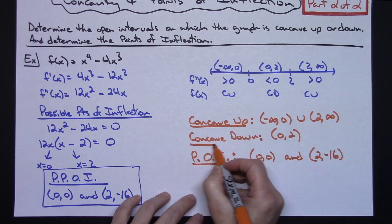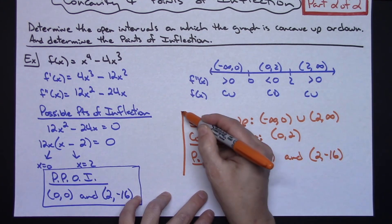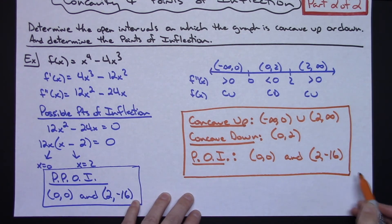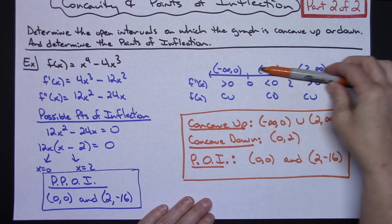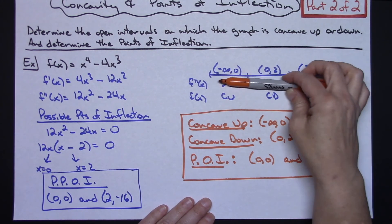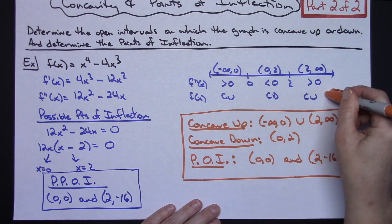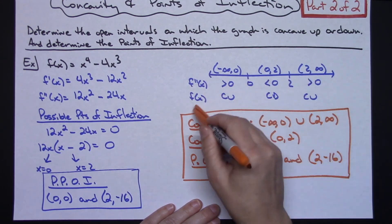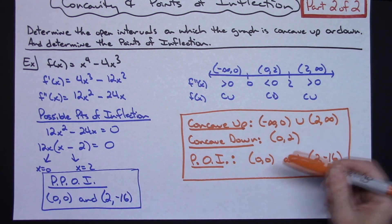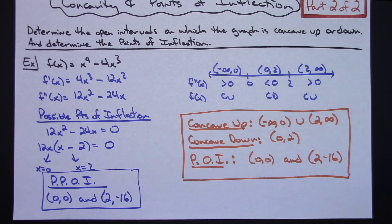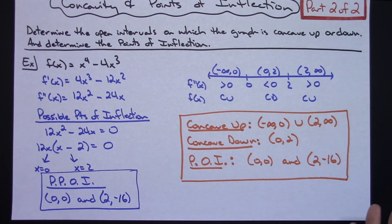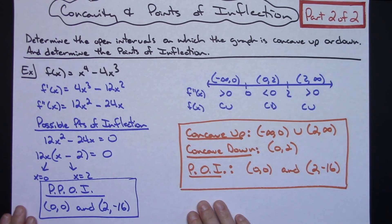A note especially for AP Calculus students: doing the number line alone is not sufficient justification. You can't just leave the number line and expect credit — you must also write out the concave up and concave down intervals explicitly. That's the tip for anyone taking the AP Calc exam. This completes part two of two on concavity and points of inflection. Definitely watch part one if you haven't yet. Thanks for watching and be sure to subscribe.